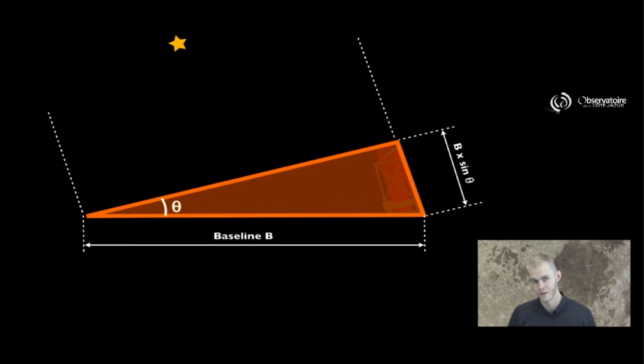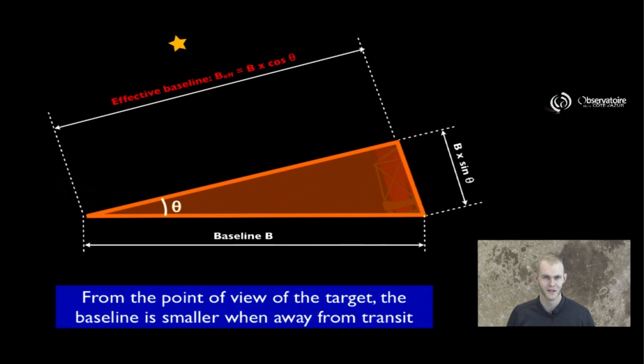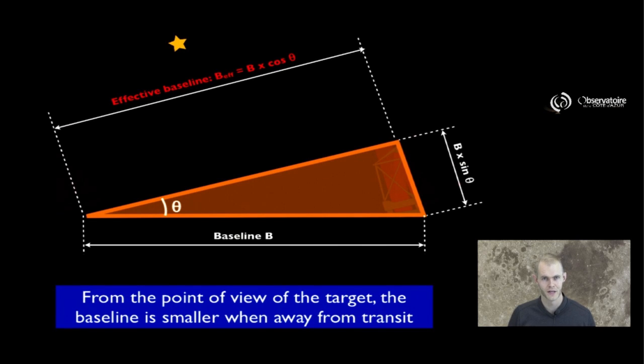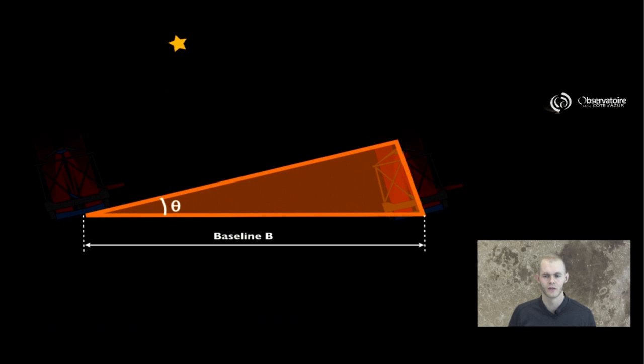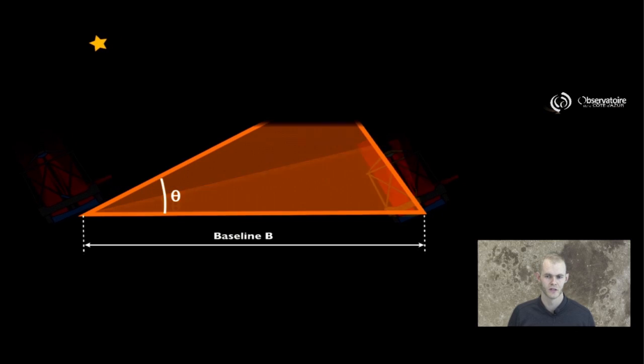Now, there is a third side to this triangle, and that is B cos theta. Trigonometry works all the time, and it has to do with the fact that, seen from the point of view of the star, the interferometric baseline seems to shrink as you go away from transit. Here's an example - if we increase that angle theta, we go even further away from transit, and that's going to emphasize this effect.